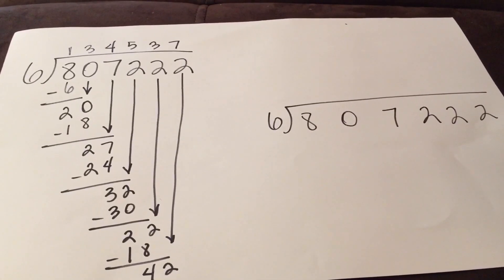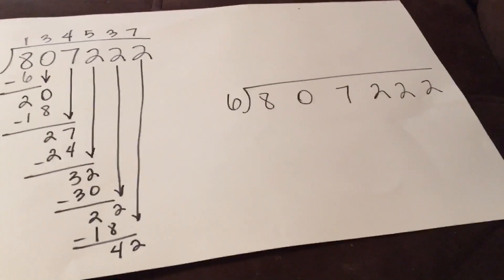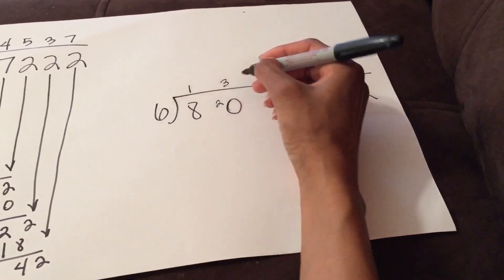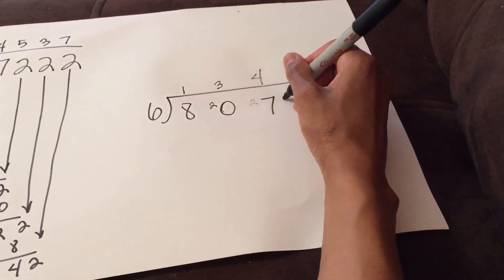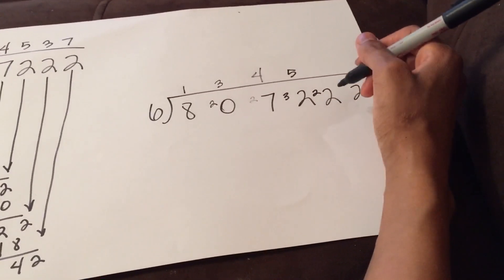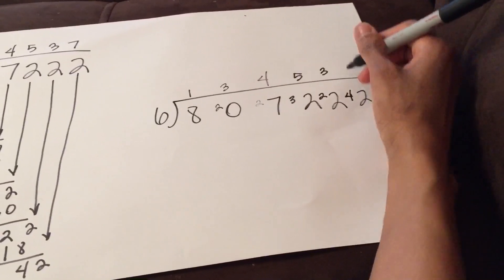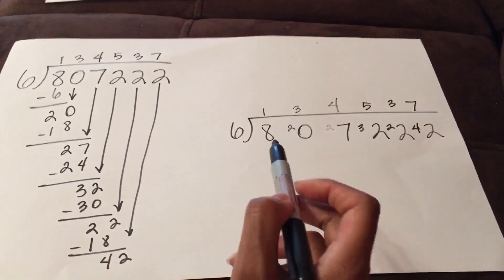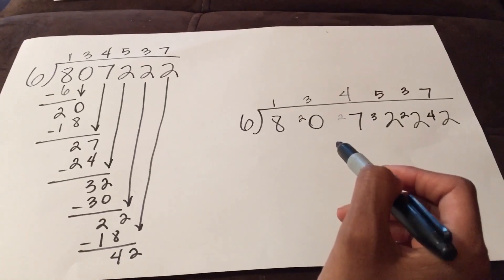So my answer is one hundred thirty-four thousand five hundred thirty-seven. Now I'll do the exact same thing with way less writing. Six goes into eight one time, remainder two. Six goes into twenty three times, remainder two. Six goes into twenty-seven four times, remainder three. Six goes into thirty-two five times, remainder two. Six goes into twenty-two three times, remainder four. Six goes into forty-two seven times. Same answer: one hundred thirty-four thousand five hundred thirty-seven. All I have to do is do the subtraction in my head, put the remainder over, and work with the number right there.